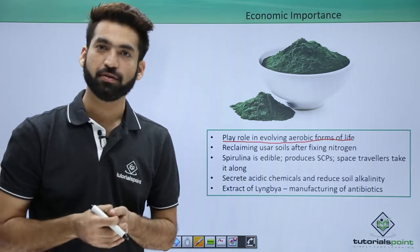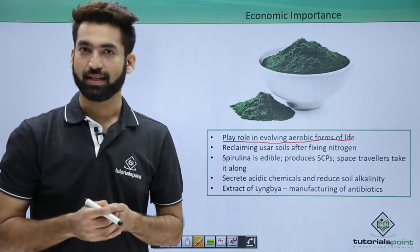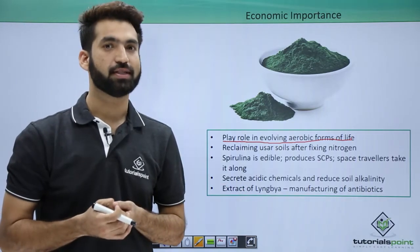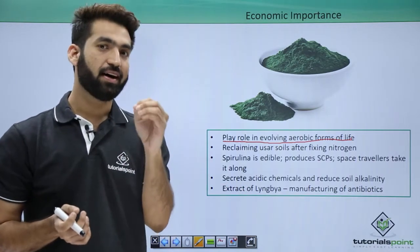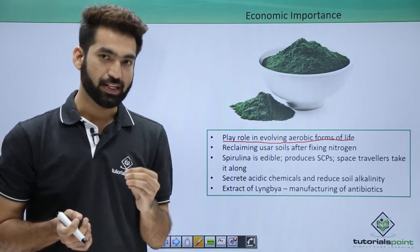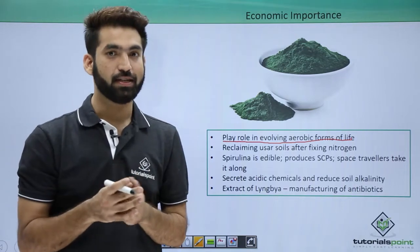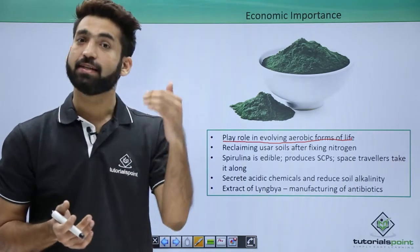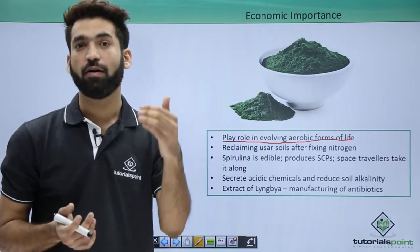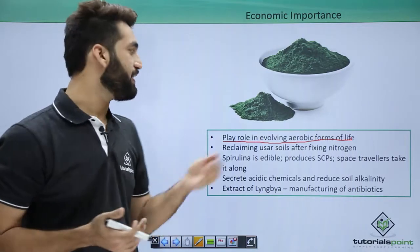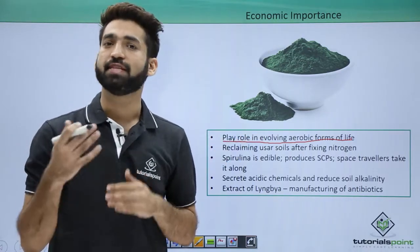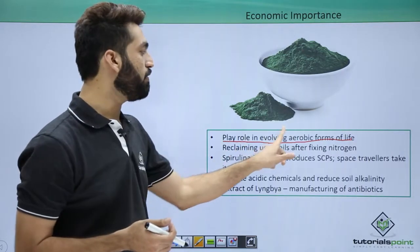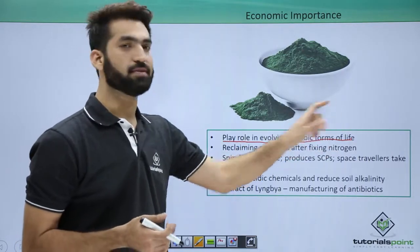Bacteria were also doing photosynthesis, and cyanobacteria were doing photosynthesis as well. But cyanobacteria consume water and after consumption of water, they can evolve oxygen. Oxygen is also evolved in higher plants. So we can say cyanobacteria were the ancient forms which started evolving oxygen, meaning they are responsible for evolving aerobic forms of life.